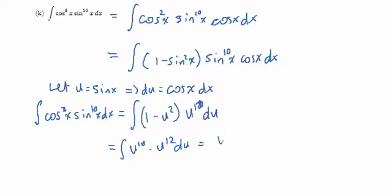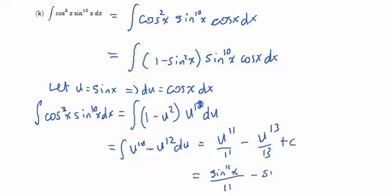This gives us u to the power of 11 over 11 minus u to the power of 13 over 13 plus C. So back-substituting, I have sine to the power of 11x over 11 minus sine to the power of 13x over 13 plus C. And that's it.